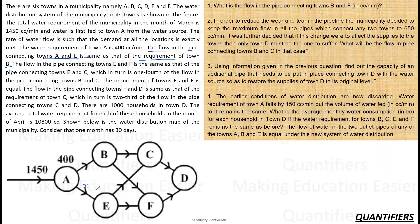The flow in the pipe connecting town A and F is the same as that of the pipe connecting A and C, which in turn is one-fourth of the pipe connecting town B and C. The flow in the pipe connecting F and D is the same as the requirement of town C, and is two-thirds of the flow of the pipe connecting C and D.